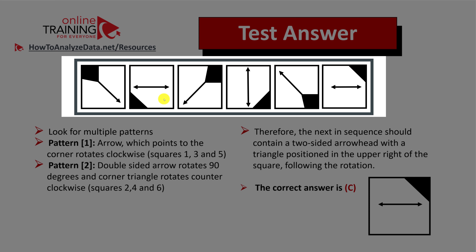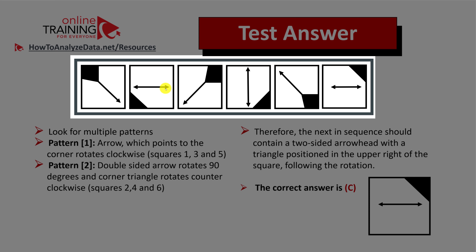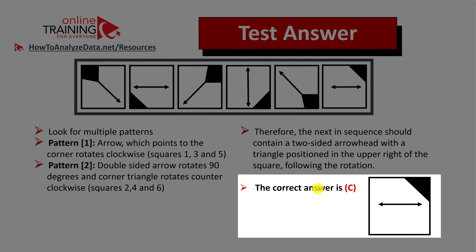Then we have a completely different pattern for squares two, four, and six — which was missing. This pattern is a double-sided arrow that rotates 90 degrees. It's completely horizontal in square two, then completely vertical in square four, so in square number six it will be horizontal again. Another thing that happens is the corner of the square rotates counterclockwise — going from the bottom left corner to bottom right corner, so the next position for that corner would be the upper right corner. So the correct answer here is choice C.